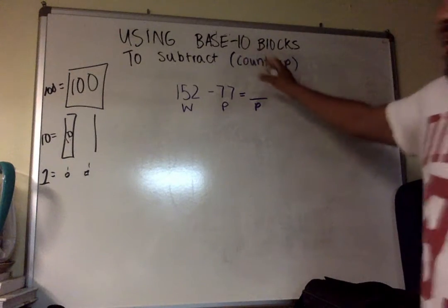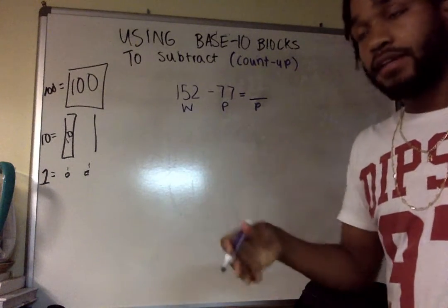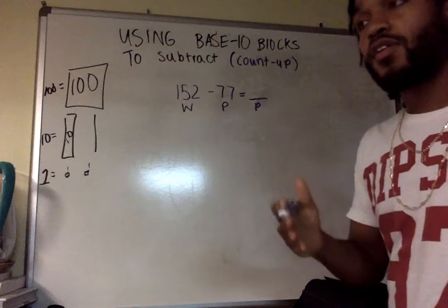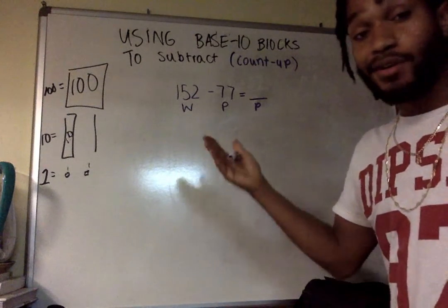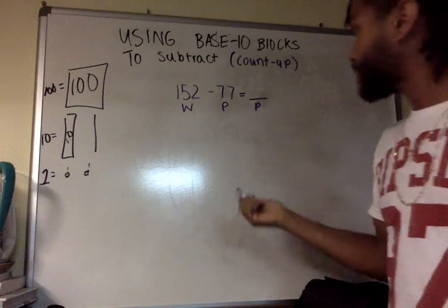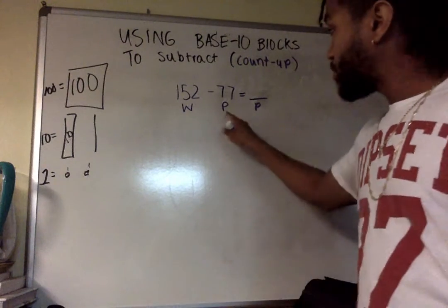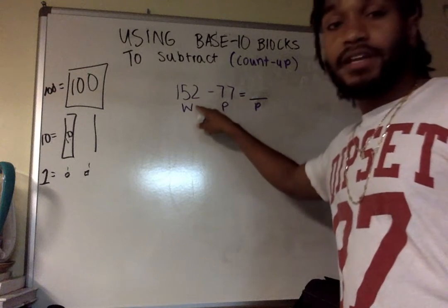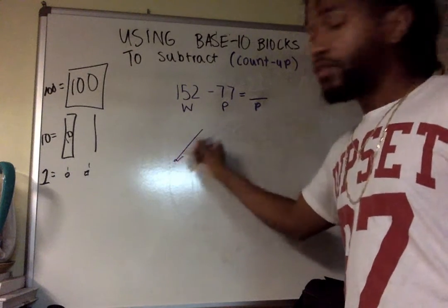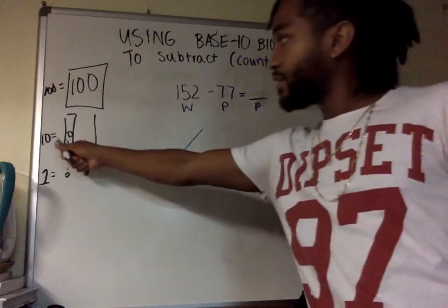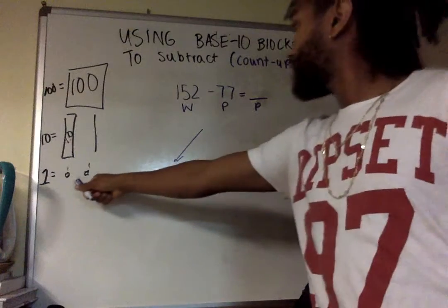So we're going to use base-10 blocks. I had another video of using base-10 blocks when you're subtracting. Most kids are familiar with adding up, whether it be on a number line, but also with base-10 blocks as well. When I say adding up, we're starting from the part and we're adding up to get to the whole. So first, let me draw 77. It doesn't have any hundreds in it, so I'm going to draw seven 10s and seven ones.